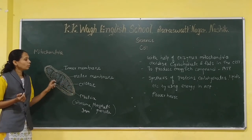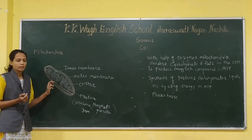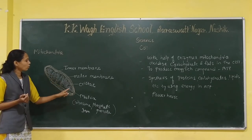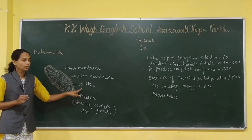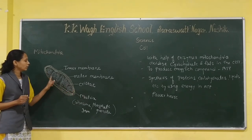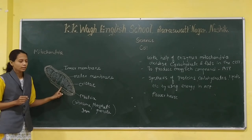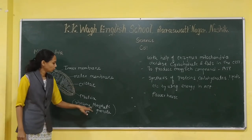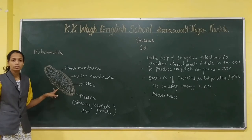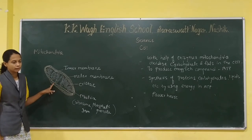The inner membrane is deeply folded. It is longer in length and deeply folded, and those folds are called cristae. It contains a proteinaceous gel called the matrix, and it contains ribosomes, phosphate granules, and DNA. Using these, it can produce its own proteins.